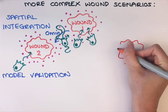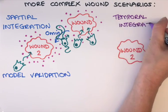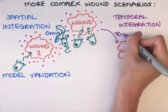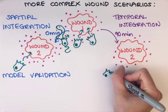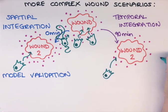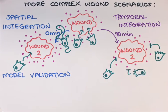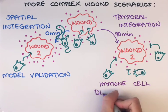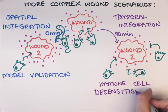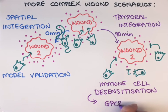Perhaps more biologically interesting, we also modelled the effect of a second wound made not at the same time, but 90 minutes after the first wound. Surprisingly, when we tested this scenario experimentally in vivo, we found that the immune cells actually ignored the presence of the second wound. This suggests that exposure to the first wound has actually desensitised the immune cells to a second wound signal. This is an exciting discovery, as it hints that the receptor for the wound attractant could be a G-protein-coupled receptor, which are well known to undergo this temporary desensitisation.